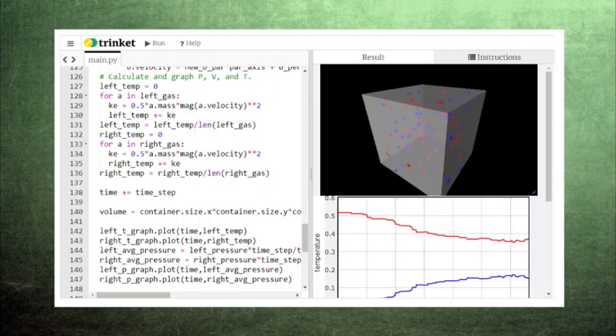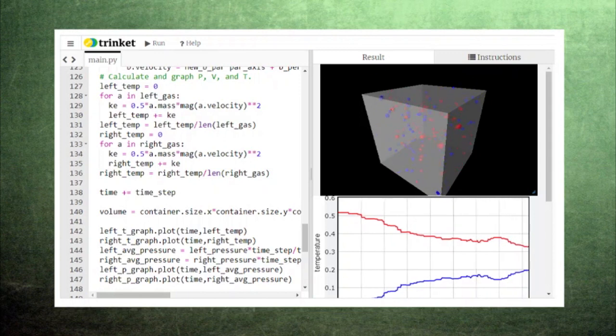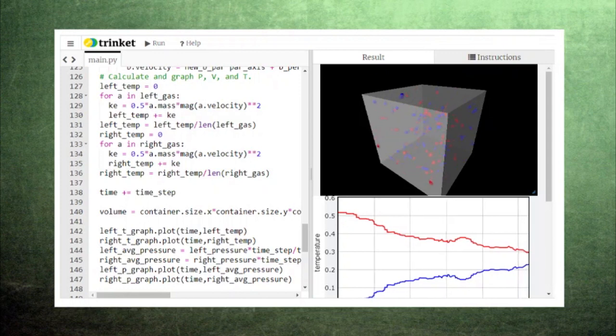We call this transfer of kinetic energy heat. We can see the impact of heat in the graph of the temperatures of the gases. The blue gas shows a temperature increase, while the red gas shows a temperature decrease.